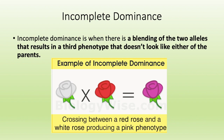Incomplete dominance is when there is a blending of the two alleles that results in a third phenotype that doesn't look like either parent. To break that down using flowers as an example: if you have one parent that's a white flower and another parent that is a red flower, the offspring would be pink or purple — as you can see in this picture. The offspring is a completely different color than either parent.